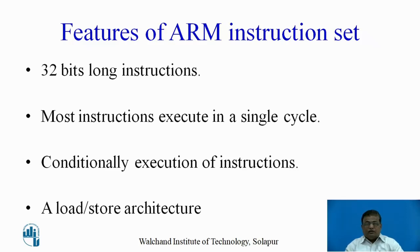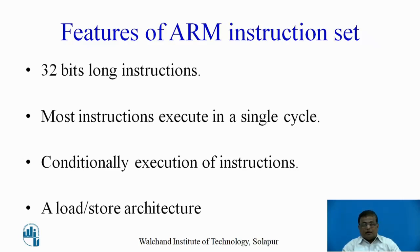The major features of the ARM instruction set are as follows. In ARM7, all the instructions are 32 bits long. Most of the instructions execute in a single cycle because the length of most instructions is the same. This feature helps to implement the pipeline architecture.